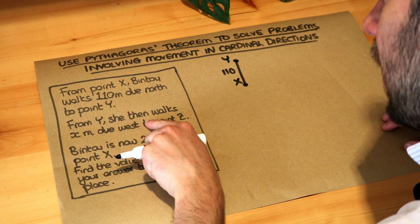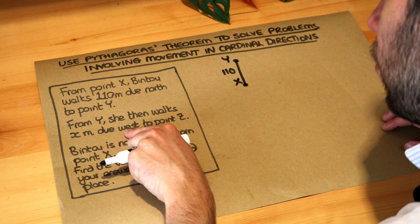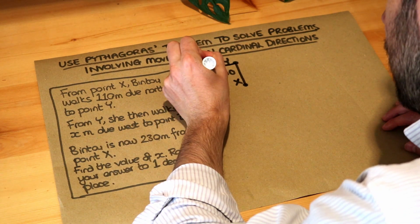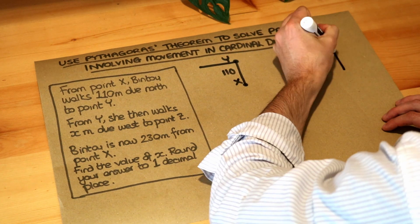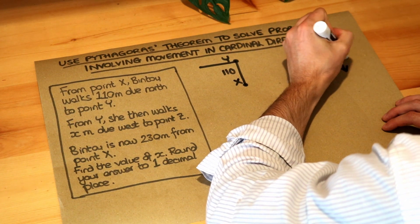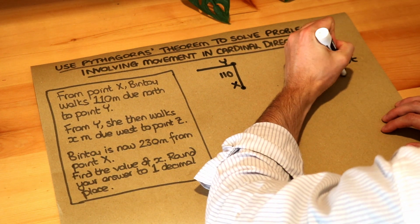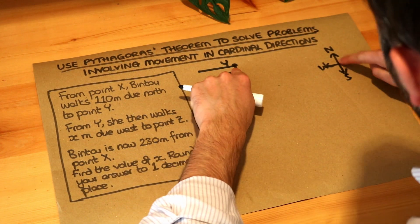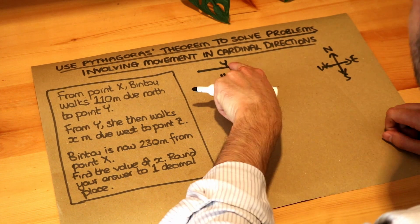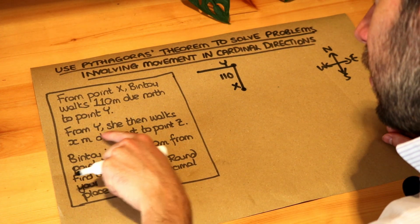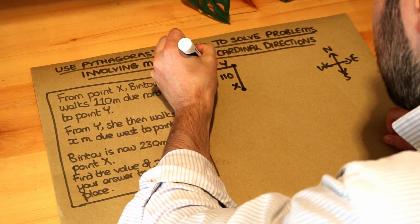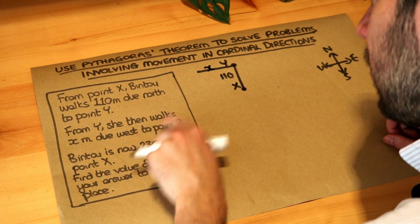From Y she then walks x meters due west. So we're going to walk west in that direction. In case you've forgotten your cardinal directions, that's north, east, west, south. So we initially moved north and now we've gone west to the left. She walks x meters due west to point Z.